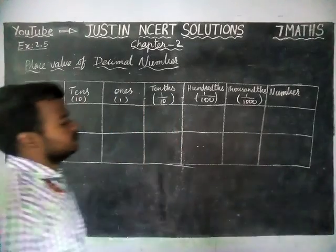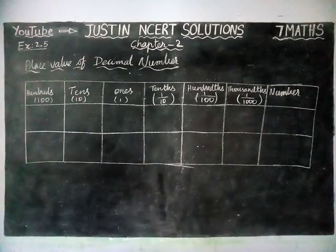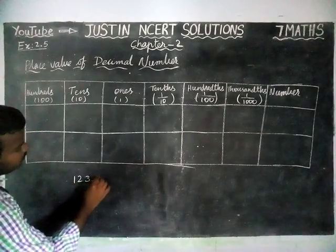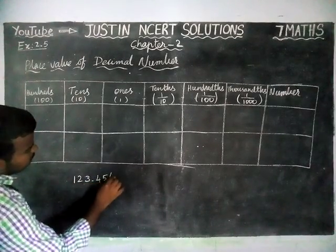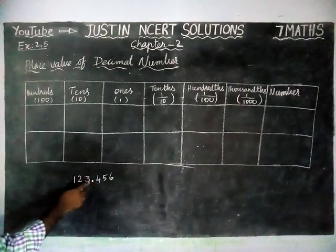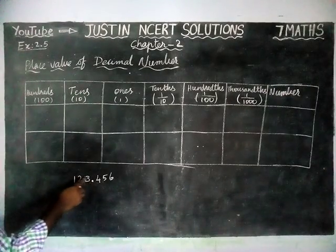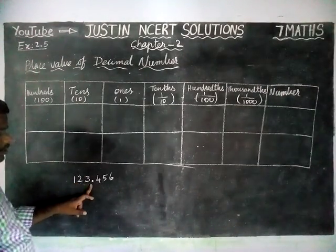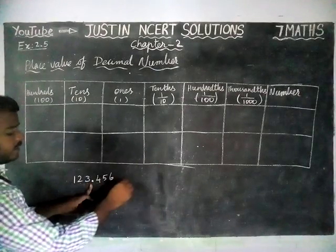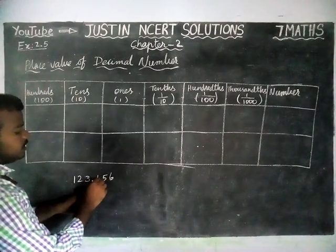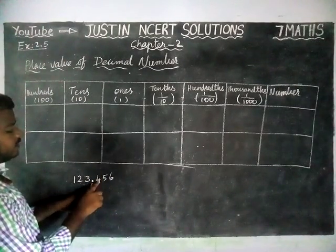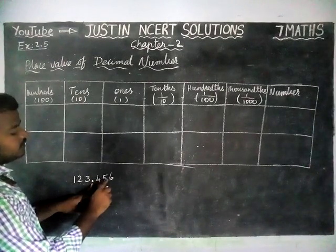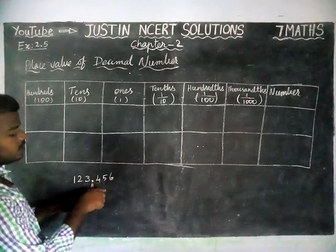Now we are going to see how to write a decimal number in the place value chart. If it is a normal number, say 1, 2, 3, 4, 5, 6 — from the decimal point, the left hand side is as usual: 1, 10, 100. From the decimal part, we have to see the right hand side. Here we cannot take 1, 10, 100. Instead, we will take 10, 100, 1000 — and that also in division.